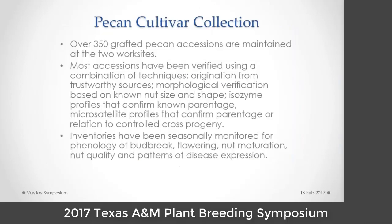Our pecan cultivar collection now has over 350 grafted accessions maintained at two work sites in College Station and Brownwood, Texas. Most accessions have been verified by a combination of origination from trustworthy sources, morphological verification based on known nut patterns, and isozyme profiles, which were the first methods used for any type of molecular effort. In that process, we found that cultivars released as control crosses were inconsistent with isozyme patterns. We disqualified Kiowa as Mahan by Odom and found it was consistent with Mahan by Desirable. Our molecular markers have since confirmed that.